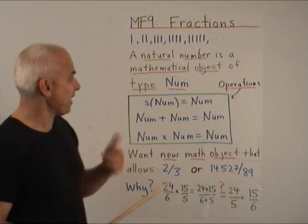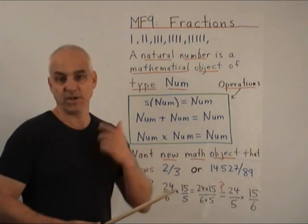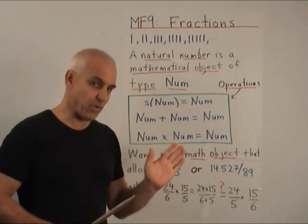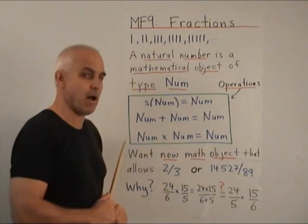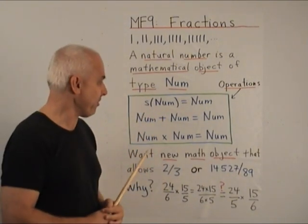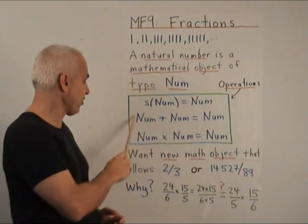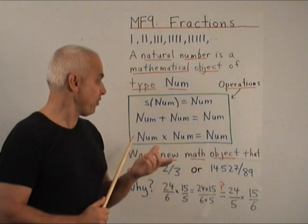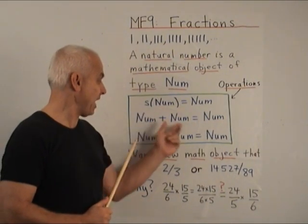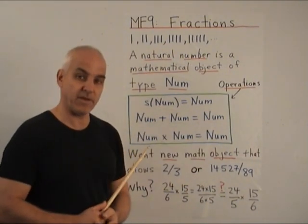Let's introduce the idea that a mathematical object has a certain type. So far we only have natural numbers and they are of type num, standing for natural number. Here's a summary of the operations that we have so far that are inputting numbers or pairs of numbers and outputting numbers.